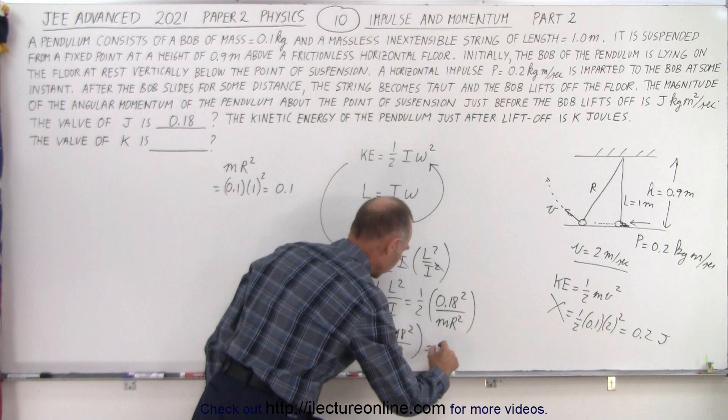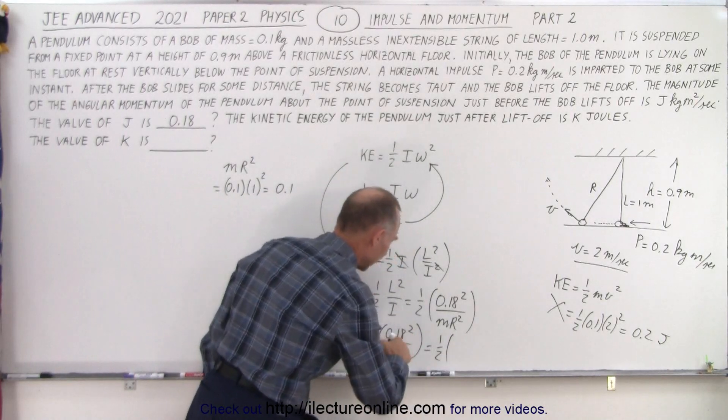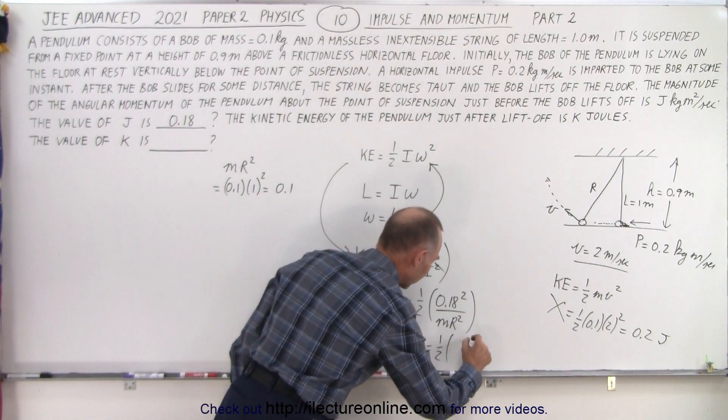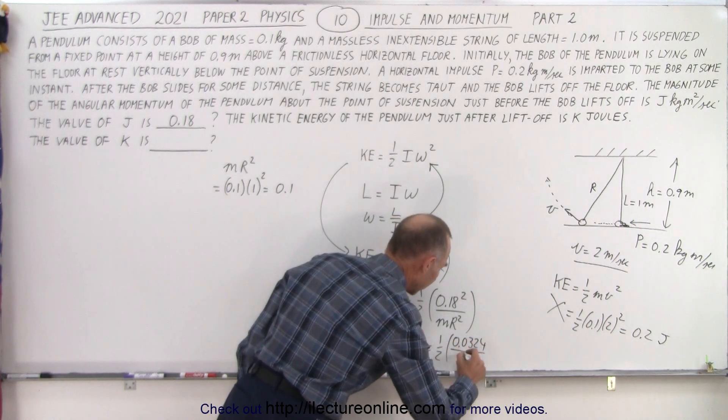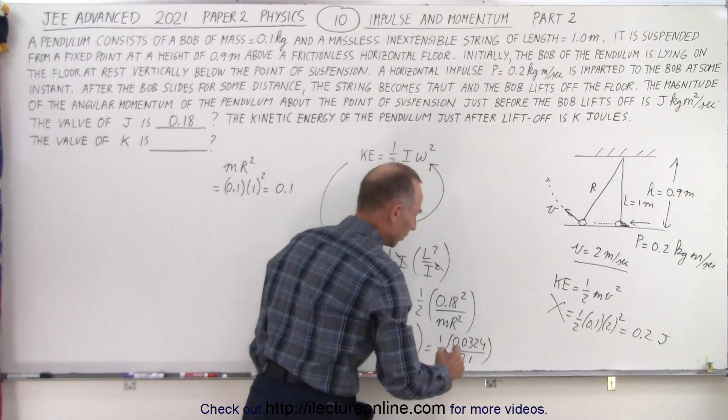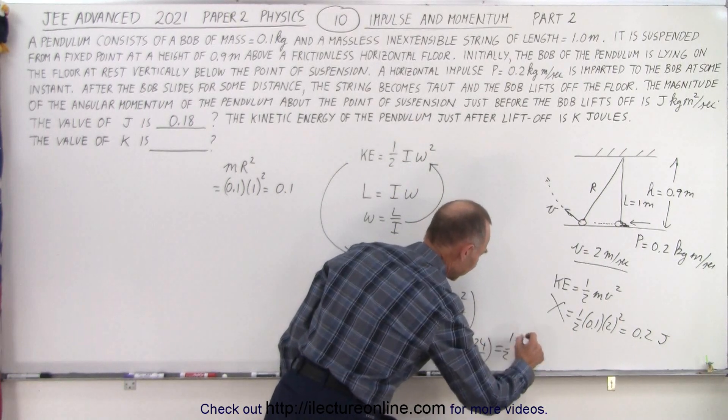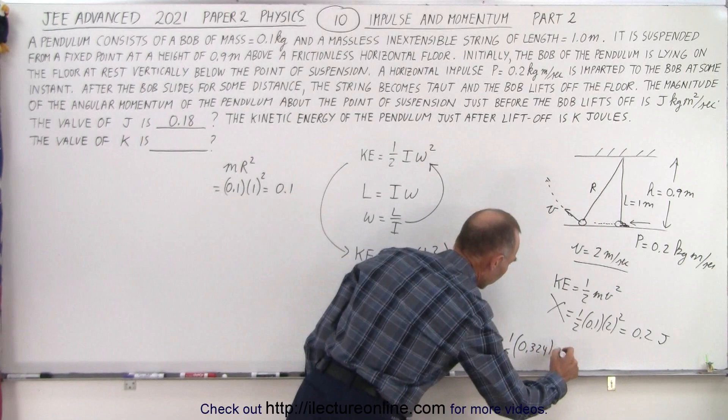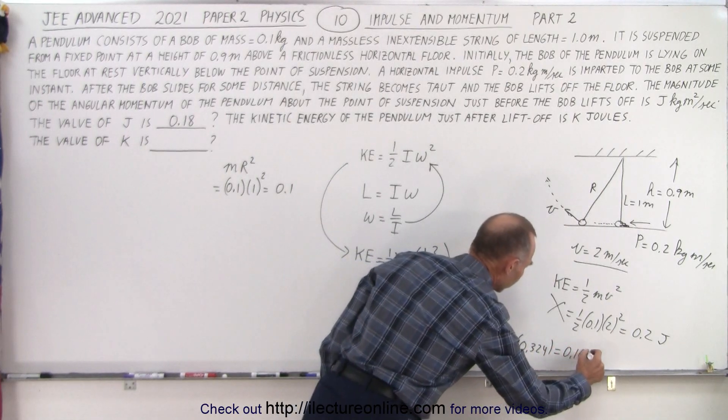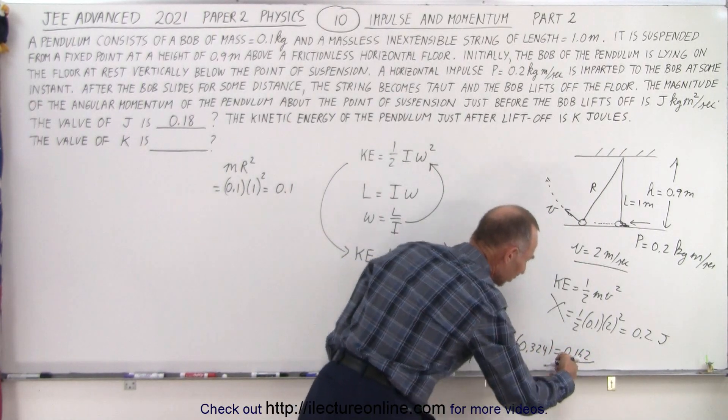So we get 1/2 times 0.18 squared divided by 0.1. This is equal to 1/2 times 18 squared, that's 324, we need a 0.0 in front of that, divided by 0.1, so that's equal to 1/2 times 0.324, which is equal to 0.162. And so that's the answer we're looking for.